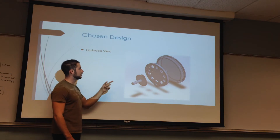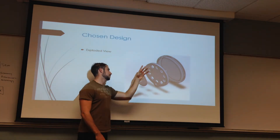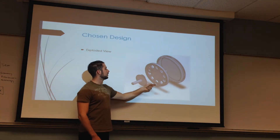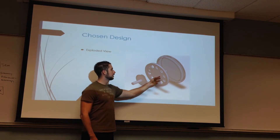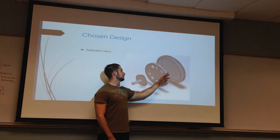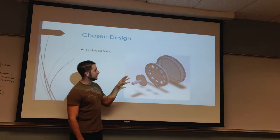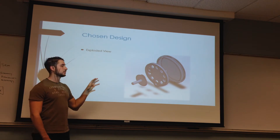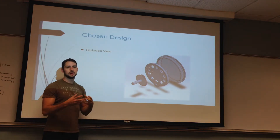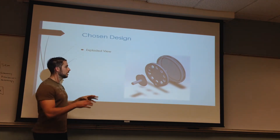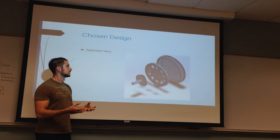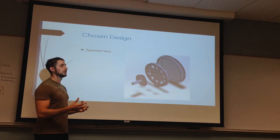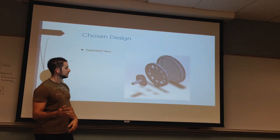Here is an exploded view of the whole system. We have four different parts: the pinion, the planetary gears, the outer ring, and the case. The case is going to hold all the components in order to have a compact and more simple design, without having all those moving parts exposed.